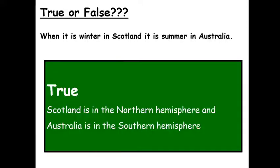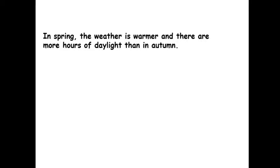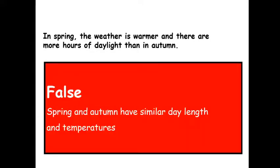The first one is true — Scotland is in the Northern Hemisphere and Australia is in the Southern Hemisphere. Question two, true or false: in spring the weather is warmer and there are more hours of daylight than in autumn. This one is false — spring and autumn have similar day length and also similar temperatures.